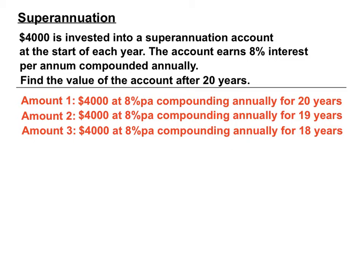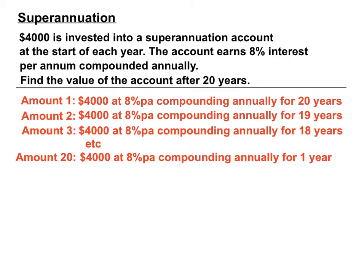The third amount — another $4,000 injected into the account — attracts the same interest rate and compounds each year, but only for 18 years. That continues until we reach the final amount. The 20th amount will be the final $4,000 invested at the beginning of the final year. It attracts 8% per annum but doesn't get enough time to compound. So we've got 20 amounts altogether.